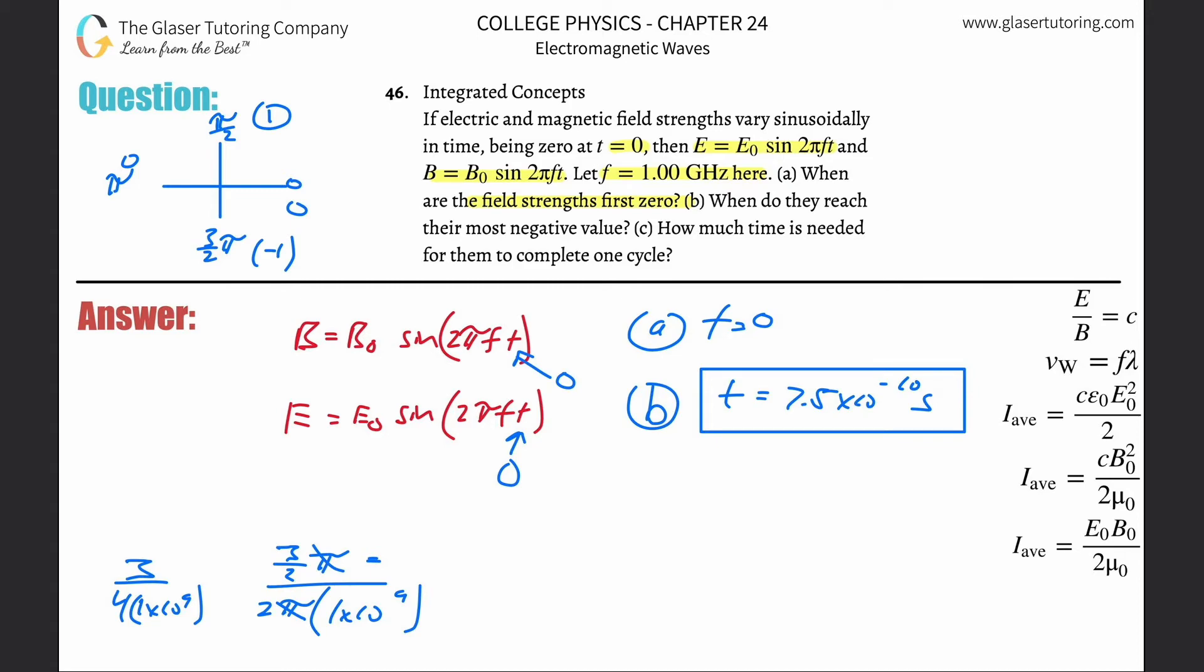And let us see how much time is needed for them to complete one cycle. So that's basically a full revolution of two pi. So two pi now has to equal the stuff inside the sine function. So that's going to be equal to two pi multiplied by the frequency times time. Notice how they cancel. So this is basically now going to be one over the frequency is equal to the time.